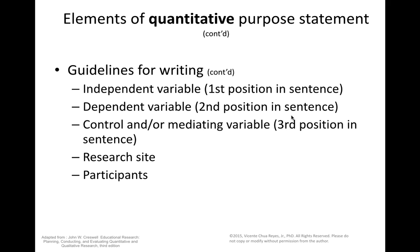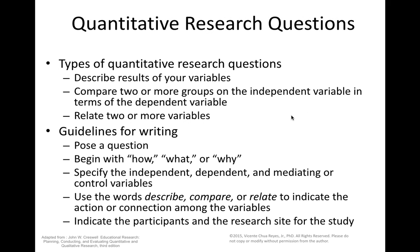Continuing the guidelines for writing quantitative purpose statements: the independent variable should usually be in the first position in the sentence, the dependent variable in the second position, and control and mediating variables in the third position. Talk about the research site and the participants.